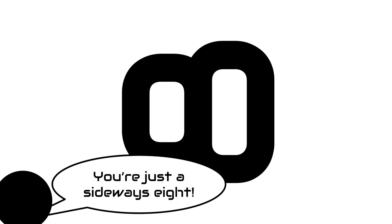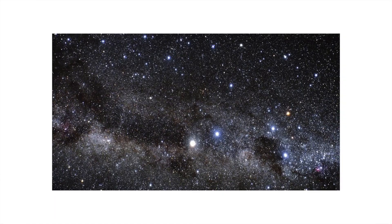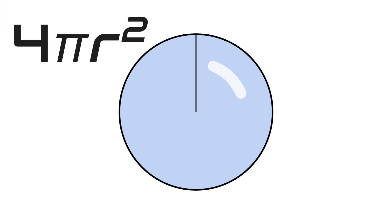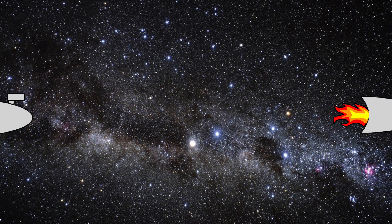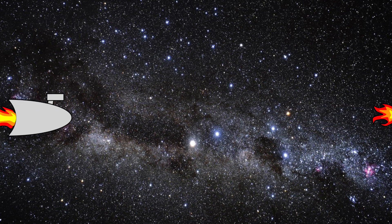If this is true, then the universe could be infinite without actually being infinite. There would be no edge, but there would be a finite amount of space, just like the surface of a sphere — there is no edge, but we have a definite and exact measure of its surface area. This means that if you go far enough or look far enough in one direction, you will return to your starting position.